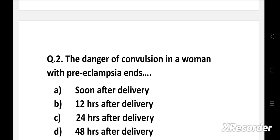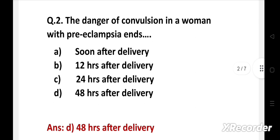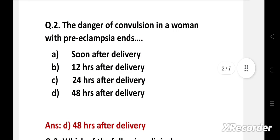The danger of convulsion in a woman with preeclampsia ends. Option a: soon after delivery, b: 12 hours after delivery, c: 24 hours after delivery, d: 48 hours after delivery. The right answer is option d, 48 hours after delivery. The danger of convulsion in a woman with preeclampsia starts from the beginning of labor and ends after 48 hours of delivery. The patient is closely monitored for the next 48 hours for convulsions.